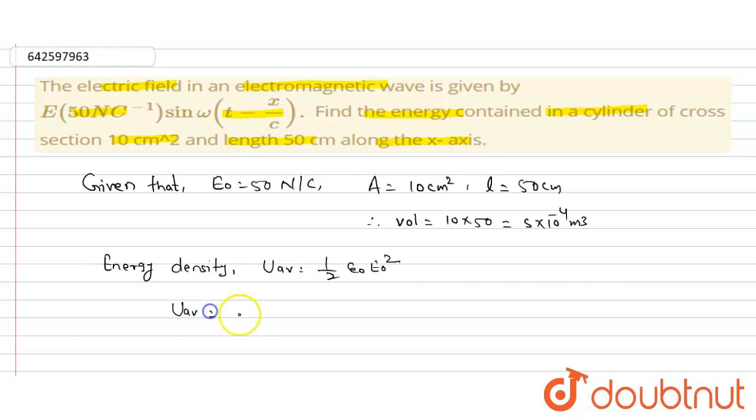So U_average = ½ε₀E₀². The value of ε₀ is 8.85 × 10⁻¹², and E₀ is 50.